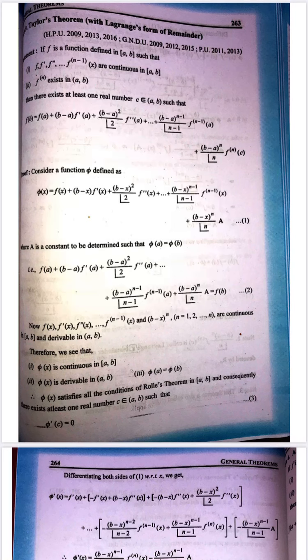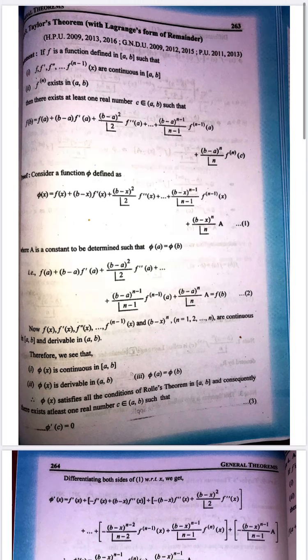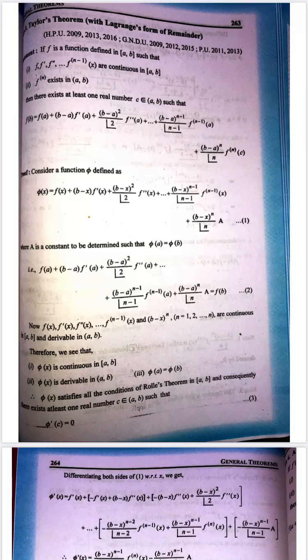exists in open interval (a, b), then there exists at least one real number c belonging to open interval (a, b) such that f(b) = f(a) + (b-a)f'(a) + (b-a)²/2! · f''(a) + ... + (b-a)^(n-1)/(n-1)! · f^(n-1)(a) + (b-a)^n / n! · f^(n)(c), where c is in open interval (a, b).